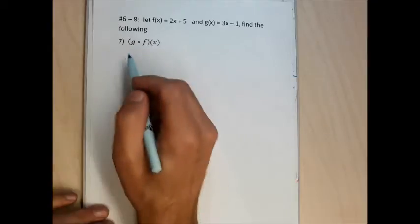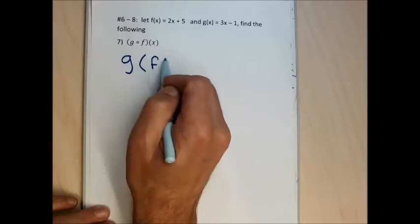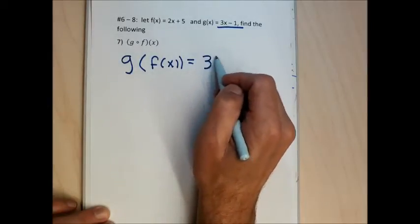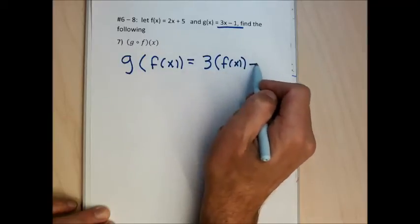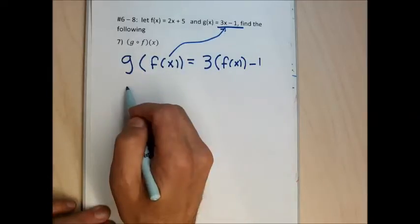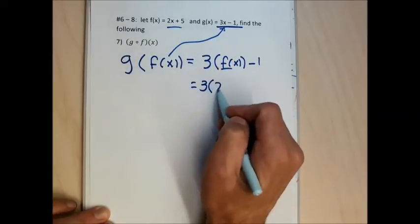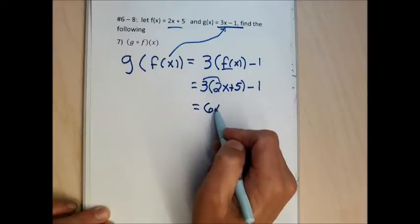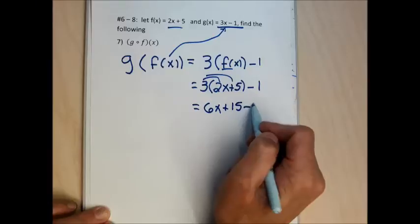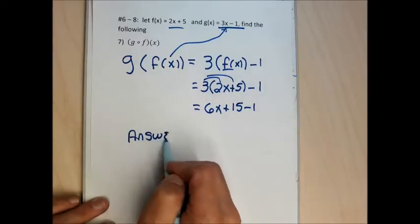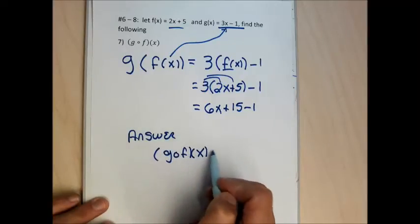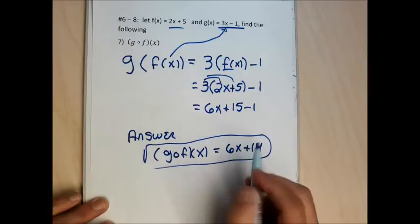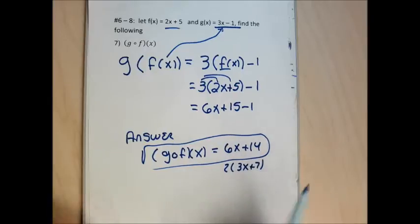Problem 7 wants g composed with f of x, which is g(f(x)). I take the x in the g function and change it to f(x), giving 3·f(x) - 1. Then I substitute f(x) = 2x + 5, getting 3(2x + 5) - 1. Clearing the parentheses: 3 times 2x is 6x, and 3 times 5 is 15, minus 1. Combining: 6x + 15 - 1 = 6x + 14. If you factor out 2 and write 2(3x + 7), that's probably better, but I wouldn't instinctively do that.